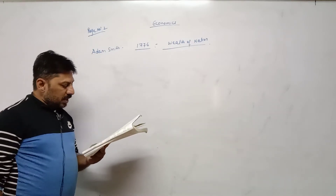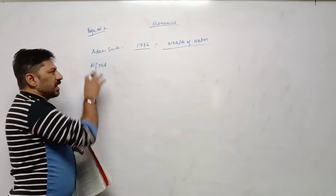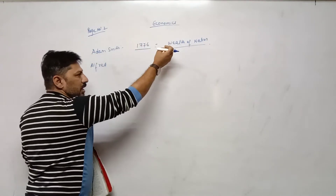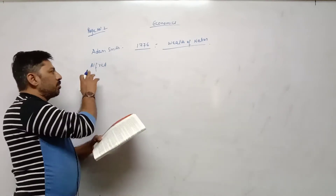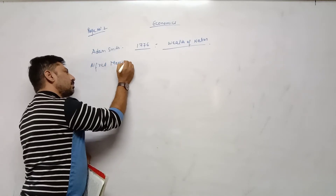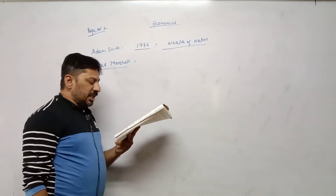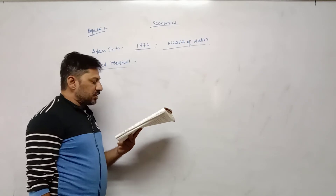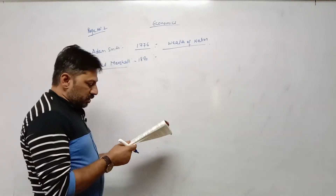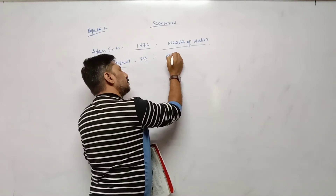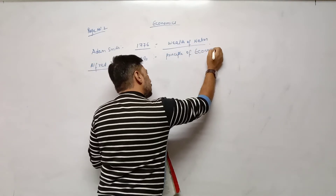The next economist is Alfred Marshall. In his book Principles of Economics, published in the year 1890, he gave his definition of economics. So the name of the book was Principles of Economics, published in 1890.